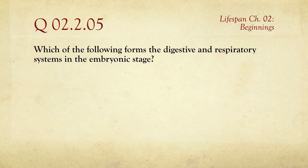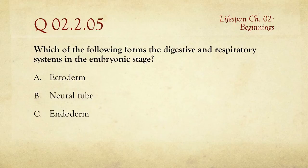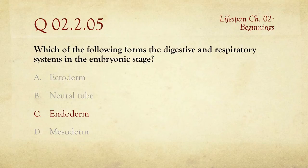Number five: which of the following forms the digestive and respiratory systems in the embryonic stage? The choices are ectoderm, the neural tube, endoderm, or mesoderm. The digestive and respiratory systems are formed from the endoderm. The term 'derm' means skin — these are different layers. The endoderm is for the digestive and respiratory systems.